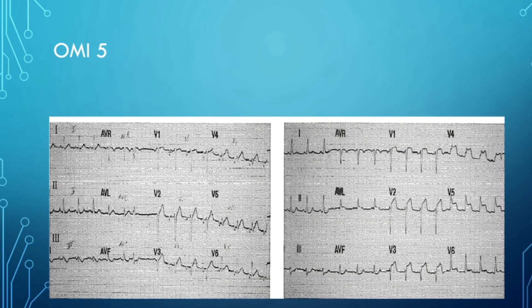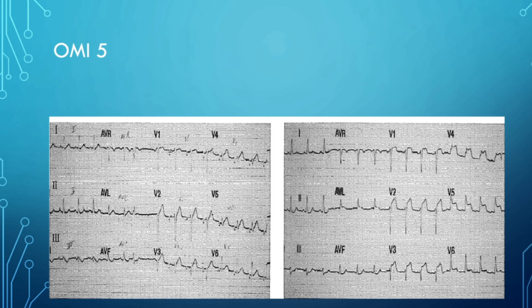This example shows why serial 12-leads are so important. The left one shows some hyper-acute T waves in V4 — just slightly larger than the QRS complex, and maybe a little in V3. Then a few minutes later: massive ST elevation in V2, V3, V4, V5, V6, and a little in V1, a lateral MI in lead 1 and AVL, and depression in leads 2, 3, and AVF. That is why it's important to do serial 12-leads — just wanted to hammer that point home.